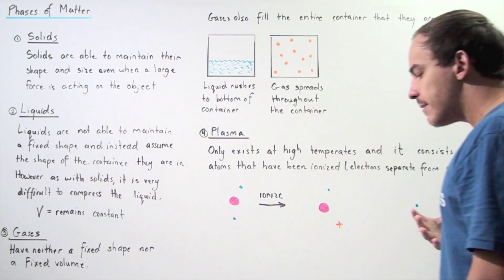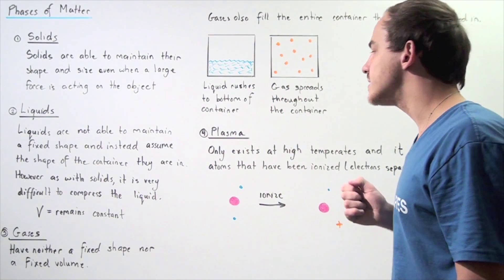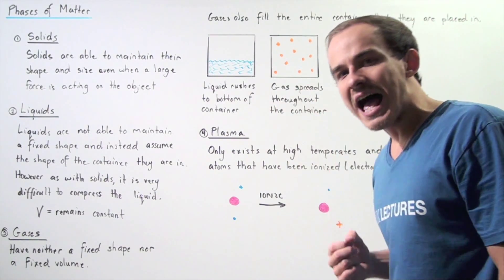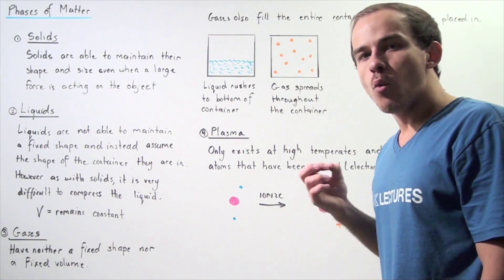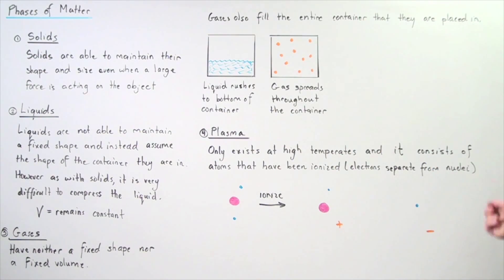Now, let's examine a less common but the fourth type of phase of matter and this is known as plasma. So, plasma only exists where there are very high temperatures and it consists of atoms that have been ionized.